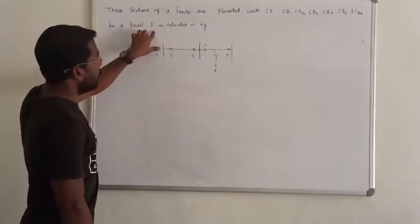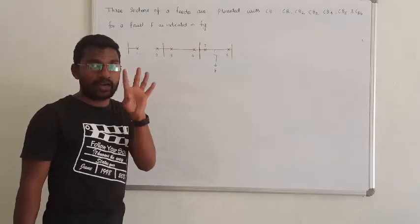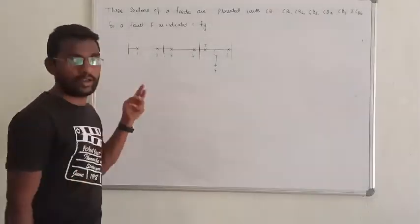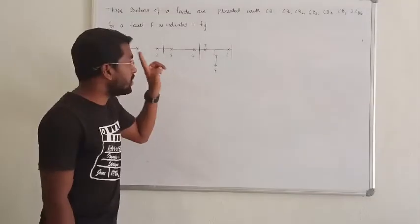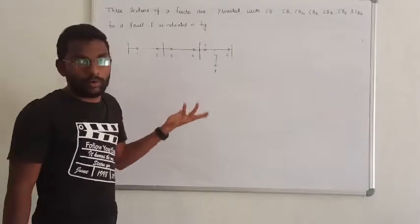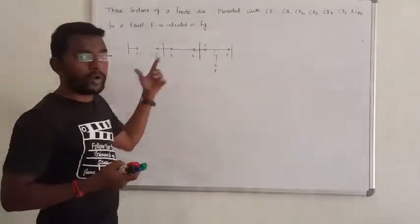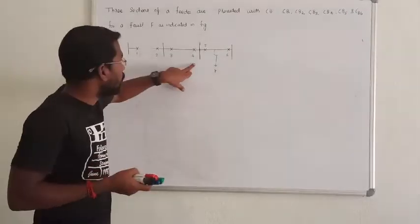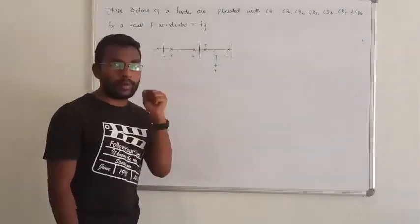For a fault F as indicated in the figure, there are four options given. The question is: which circuit breaker will operate first? That is, what is the sequence - circuit breaker 1 first, then 5, then 3, then 4? Which circuit breaker will operate first?